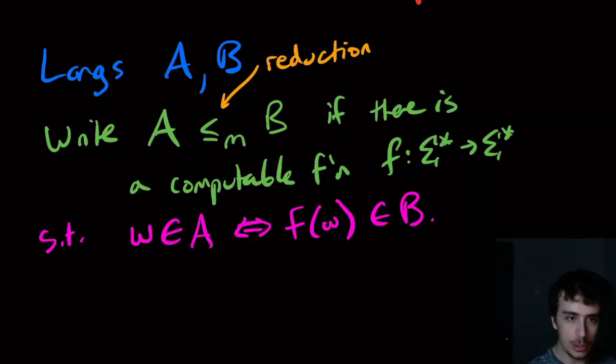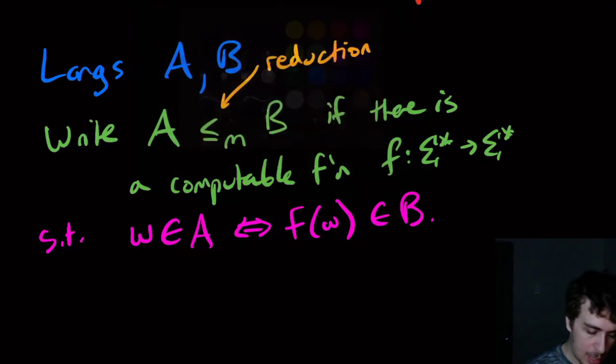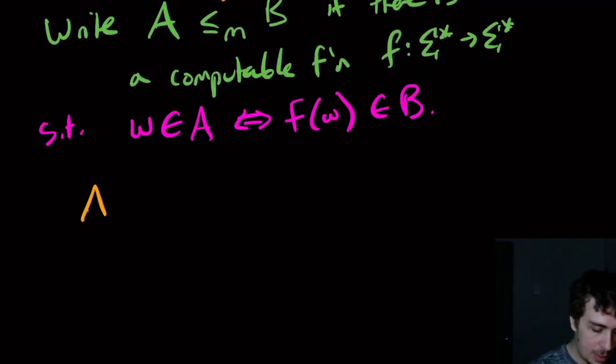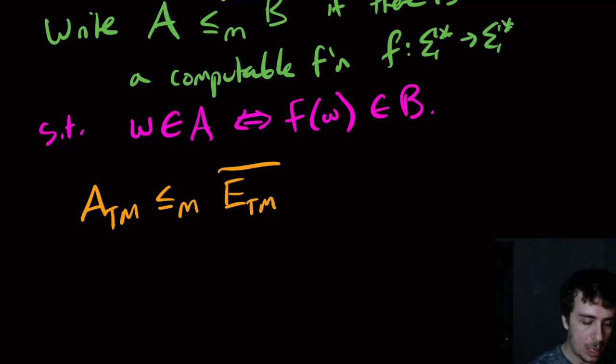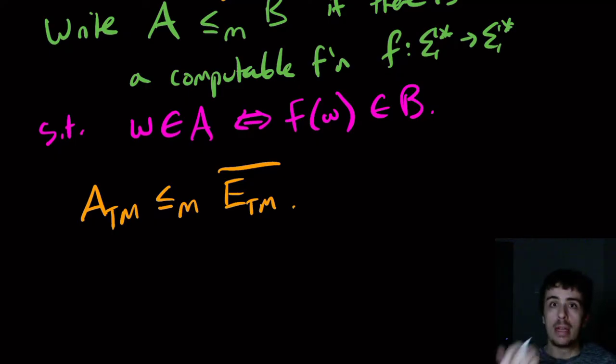So as an example, we actually saw the following reduction: A_TM ≤_m E_TM complement. And why is this? In the proof that E_TM is undecidable, what we did is we made a Turing machine that had the property that its language was empty if and only if the Turing machine M did not accept w.